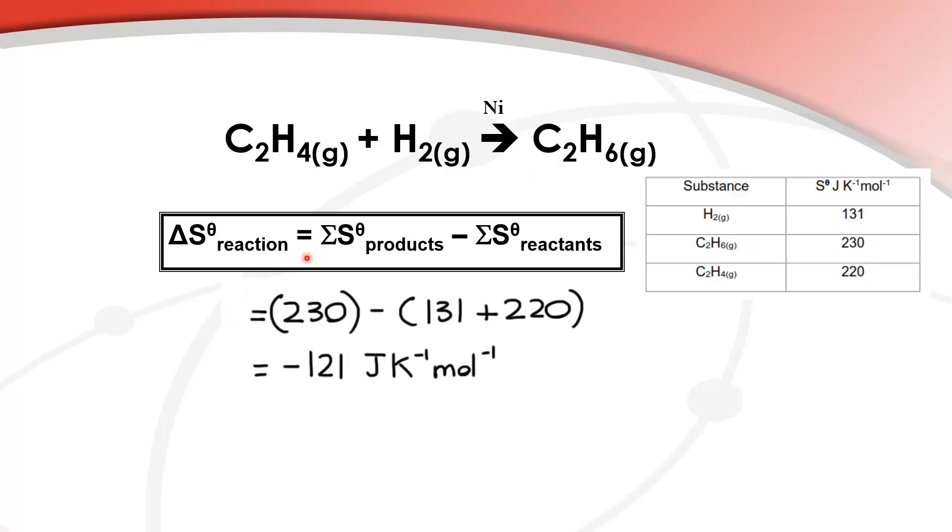Let's do the math. The sum of the absolute entropy of the products minus the sum of the absolute entropy of the reactants. So here we have the absolute entropy of ethane minus the absolute entropy of hydrogen plus ethene. When you do the math you end up with negative 121 joules per kelvin mole. So just like we predicted, we have negative entropy.